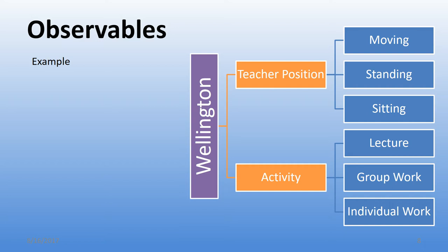As an observer during a 20-minute visit, you might arrive and find the teacher standing at the front explaining what the class will do — so you would tap 'standing.' Then 10 minutes in, the teacher moves around the room helping groups of students, and you tap 'moving.' These selections can change throughout the observation, and each change is recorded. They are not a static one-time selection; you can update them as often as the situation changes.